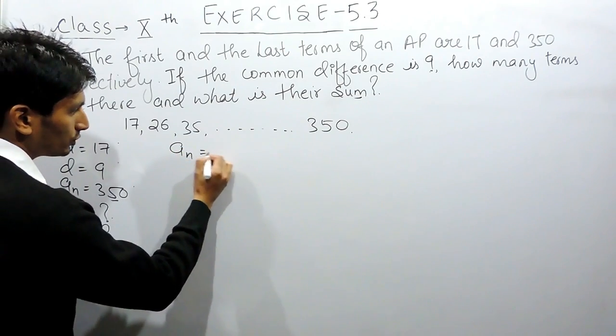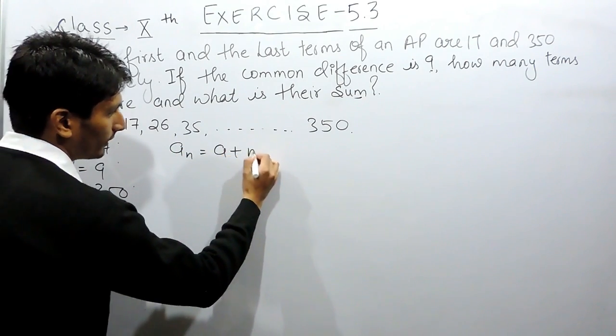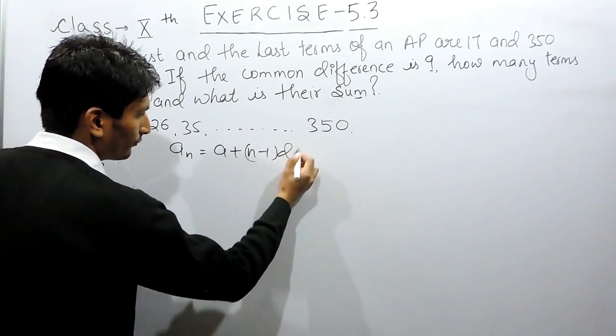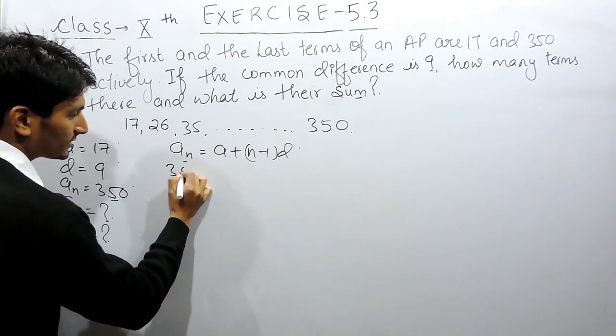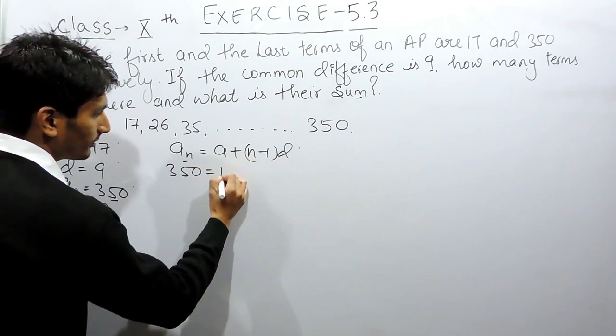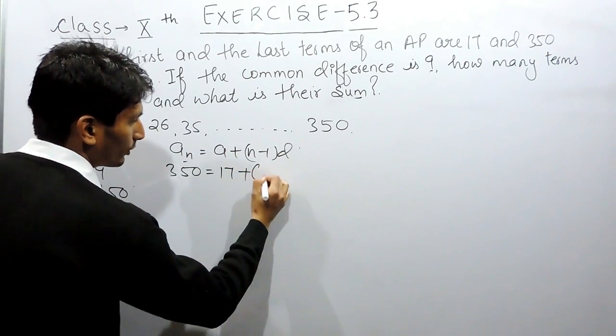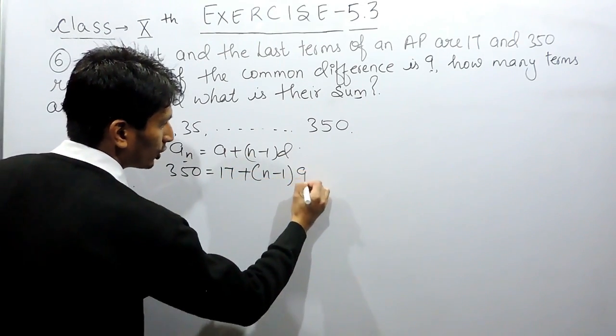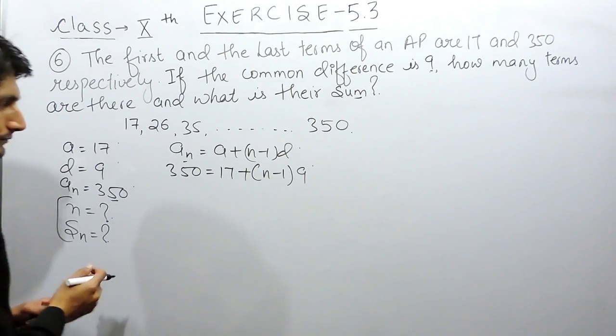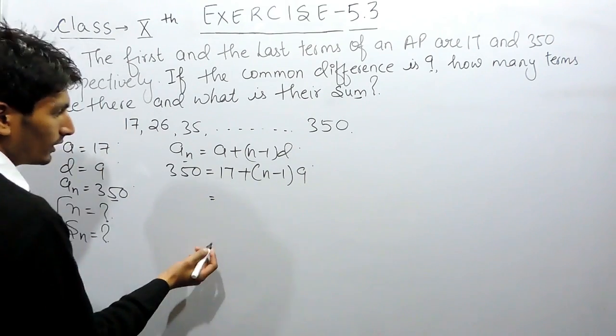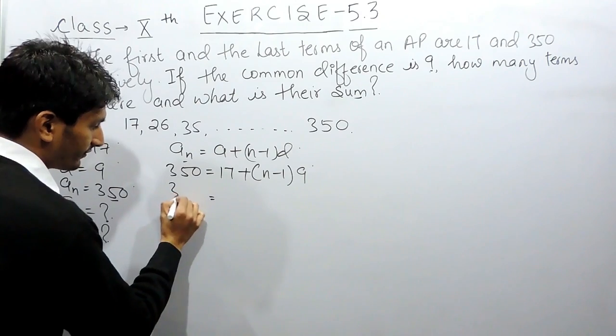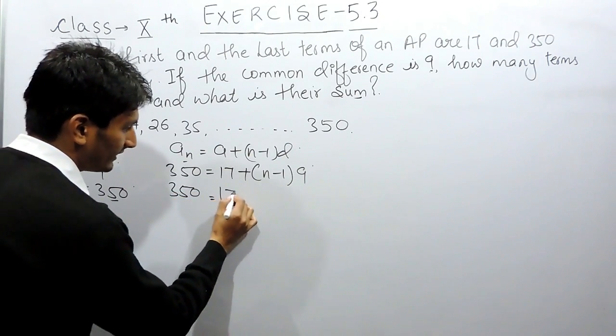So the last term, to find out the last term we have a formula and the formula is this. Now the last term is given to us 350 and the first term is 17, number of terms you have to find out and the common difference here is 9. So, let's further solve this. This is 17.